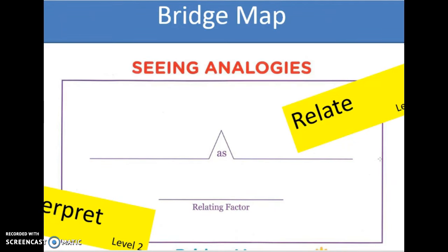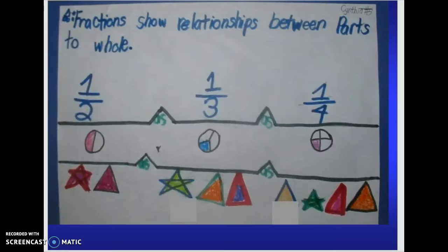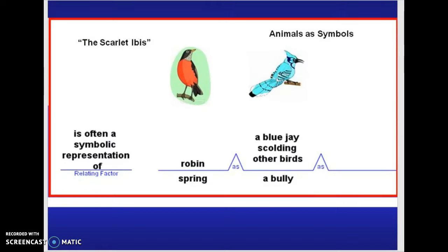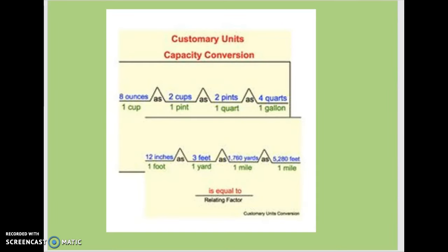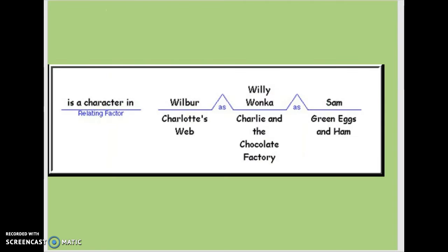A bridge map is all about analogies — make it visual with fractions, symbolism in stories where this symbolized that, conversion units for science and math. I think this would be a great thing to do with the three religions in 7th grade social studies — this is perfect for that. Here are two different stories being compared. If you do literature circles, you can combine groups and have them talking to each other about what they're reading.